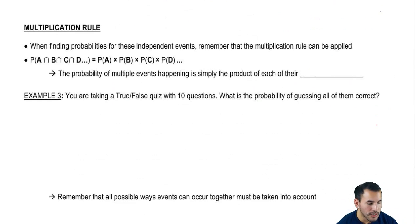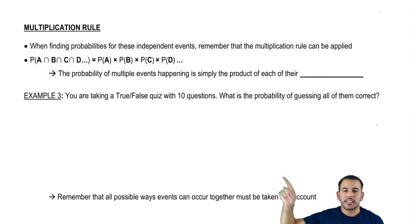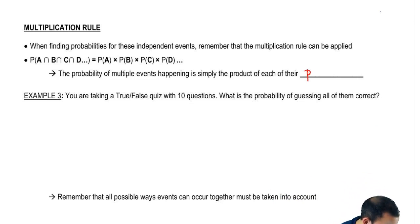So now let's talk about the multiplication rule. We've seen this before and we knew that it can be applied for multiple events. So before we saw how the multiplication rule can be applied, here again we see that for independent events, it's just multiplying the corresponding probabilities to each event. So the probability of multiple events happening is simply the product of their probabilities.